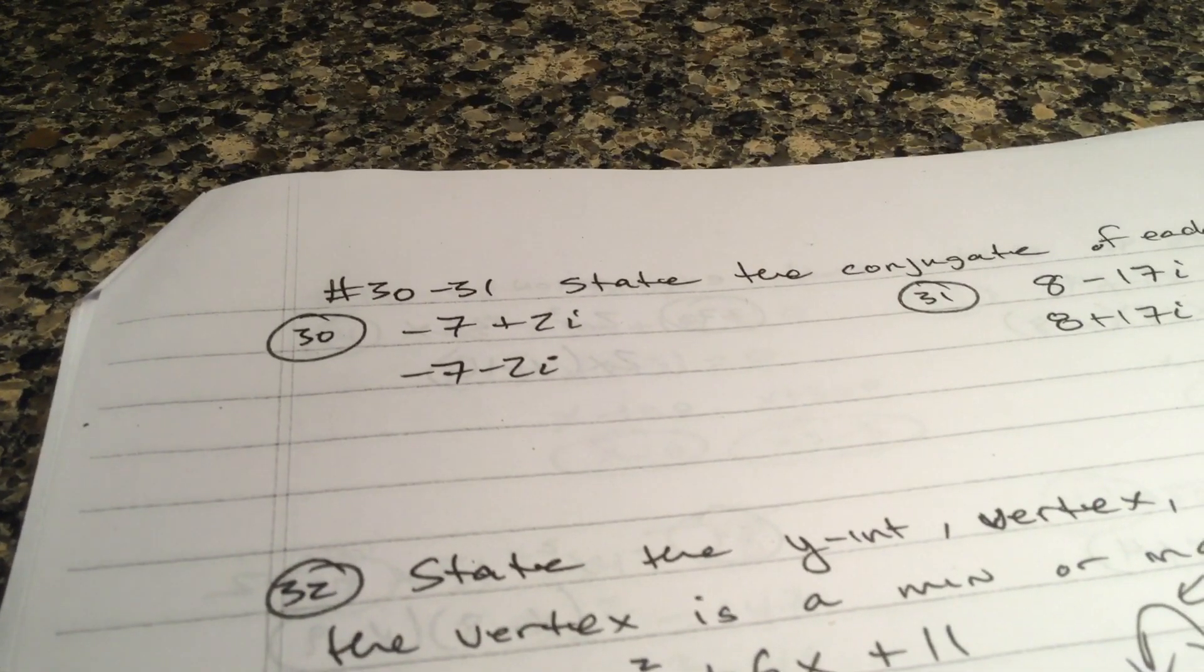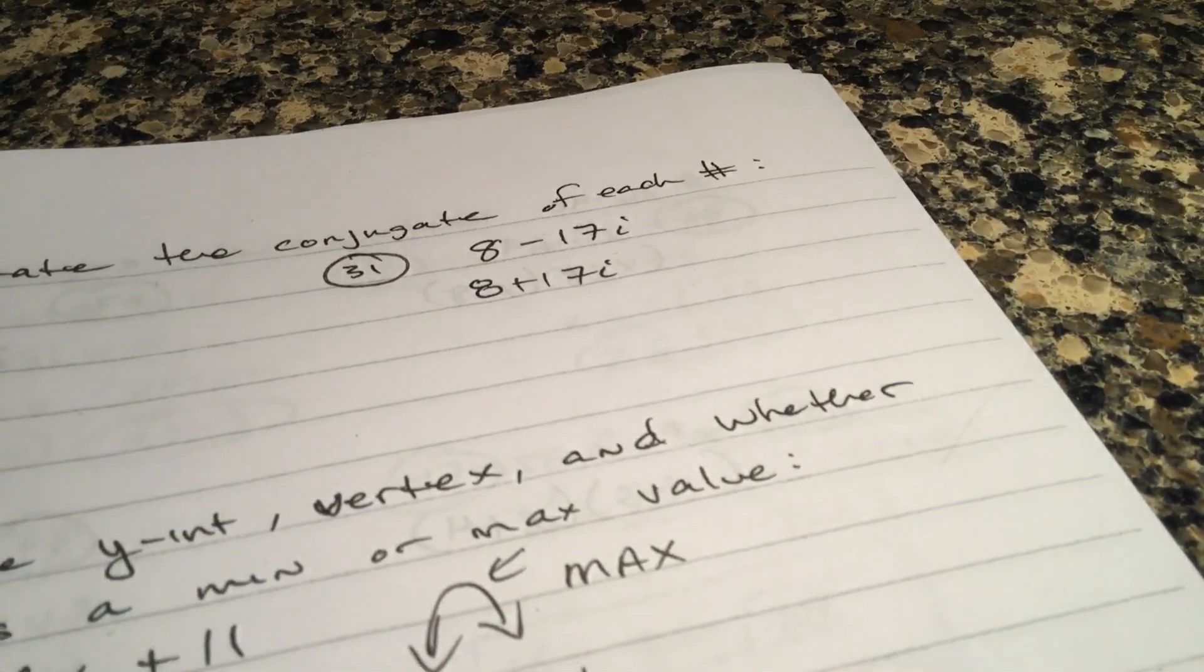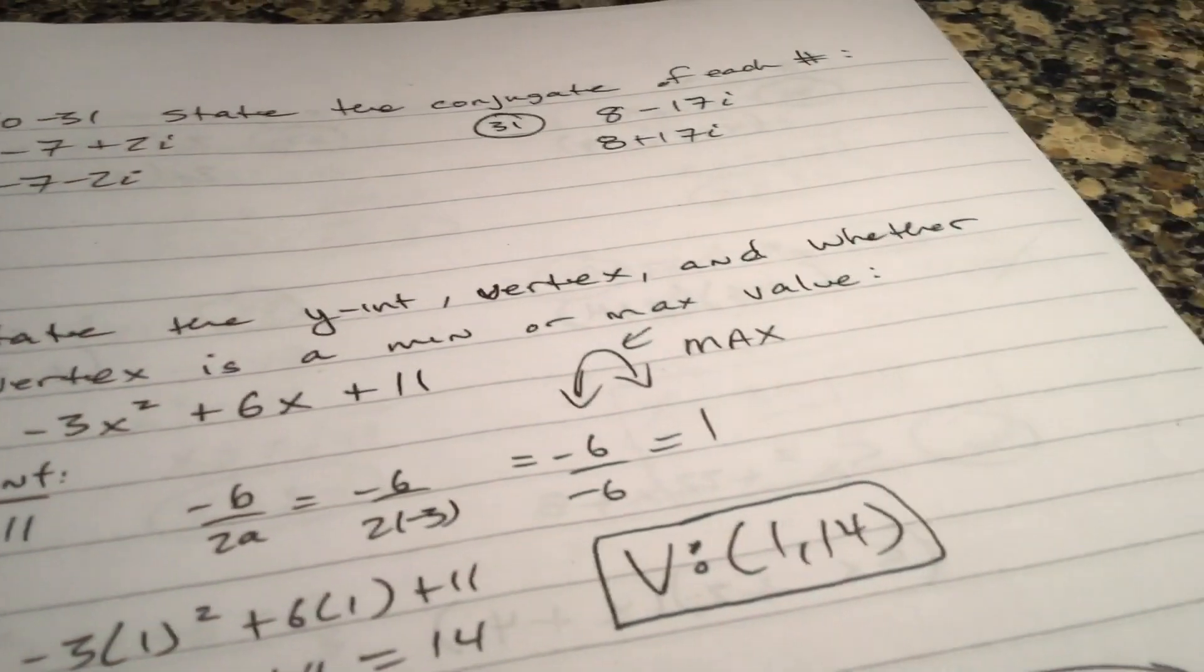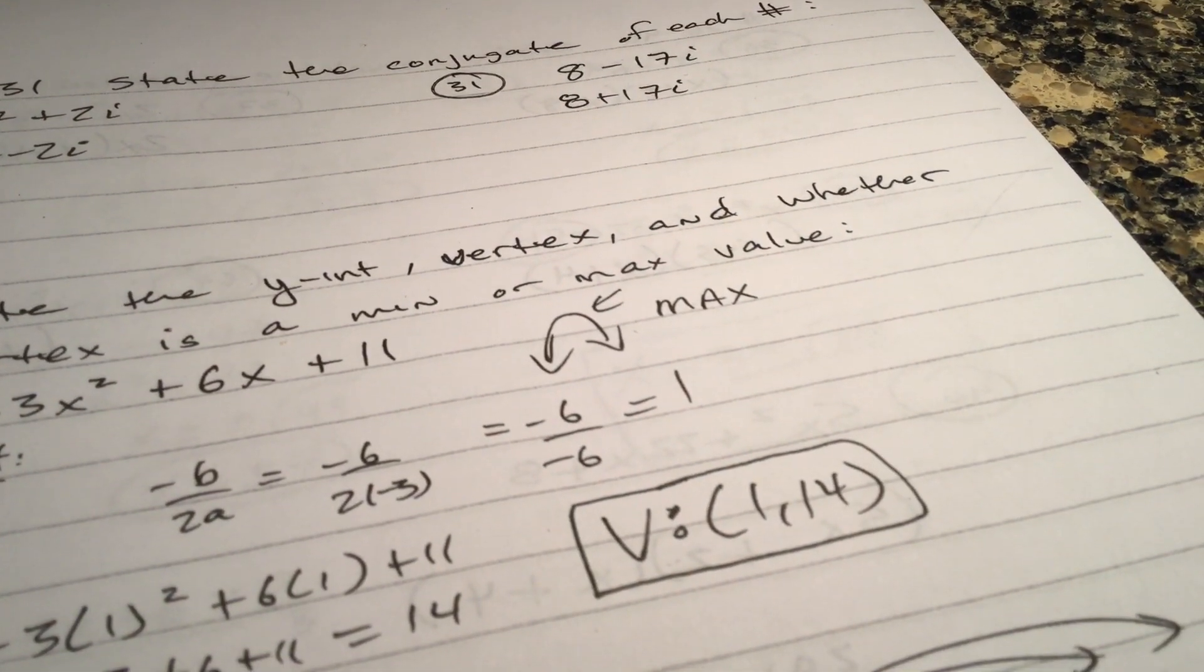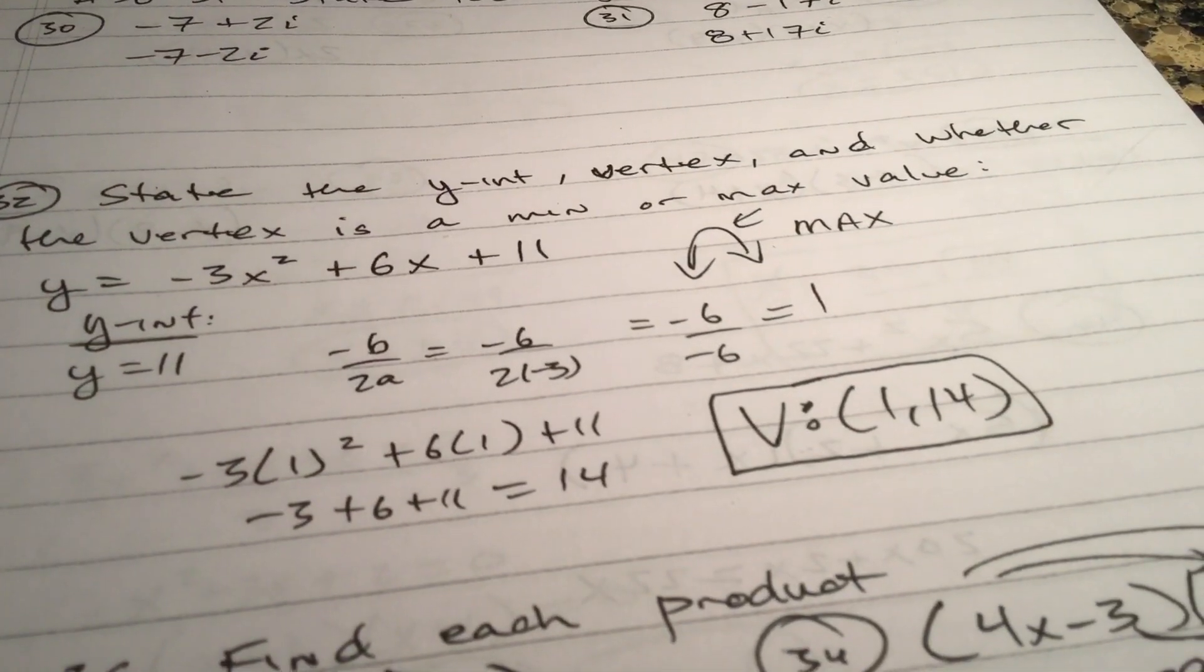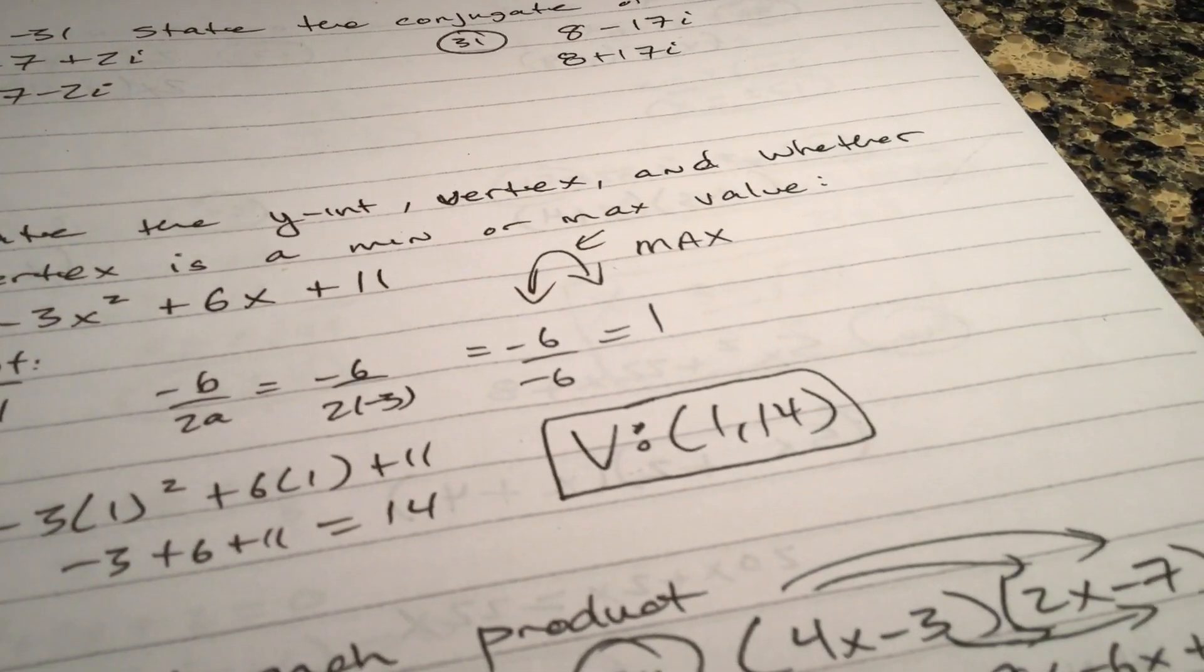All right. Moving on. The conjugates. Please don't miss conjugates. Just different sign. It was plus. Now it's negative. It was minus. Now it's plus. The y intercept is 11. It's staring at you. Negative x squared means it makes the igloo, which is a max. 2 negative b over 2a. You get 1. Plug 1 in for x. You get 14. Vertex is 1, 14.